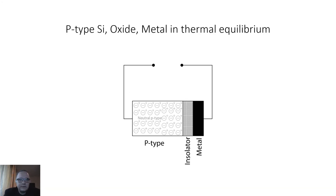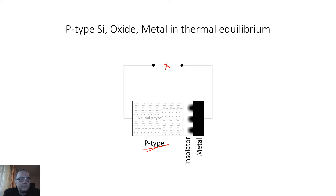Let's begin with the structure itself in thermal equilibrium, so no external voltage is applied. For my discussion I will use a p-type semiconductor — for example silicon — which is doped with acceptor atoms such that the majority of the mobile carriers are holes.